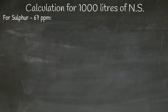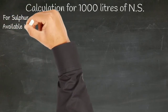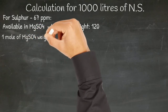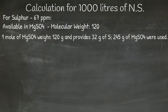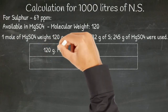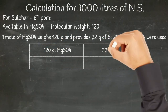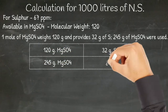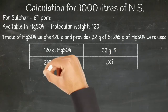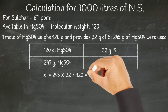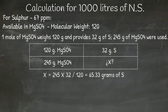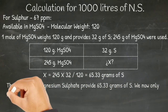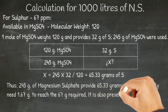Sulfur is available in magnesium sulfate, which has a molecular weight of 120. One mole weighs 120 grams and provides 32 grams of sulfur. We calculate the sulfur contained in 245 grams of magnesium sulfate: X equals 245 times 32 divided by 120, giving 65.33 grams of sulfur. So 245 grams of magnesium sulfate provide 65.33 grams of sulfur; we still need 1.67 grams to meet the requirement.